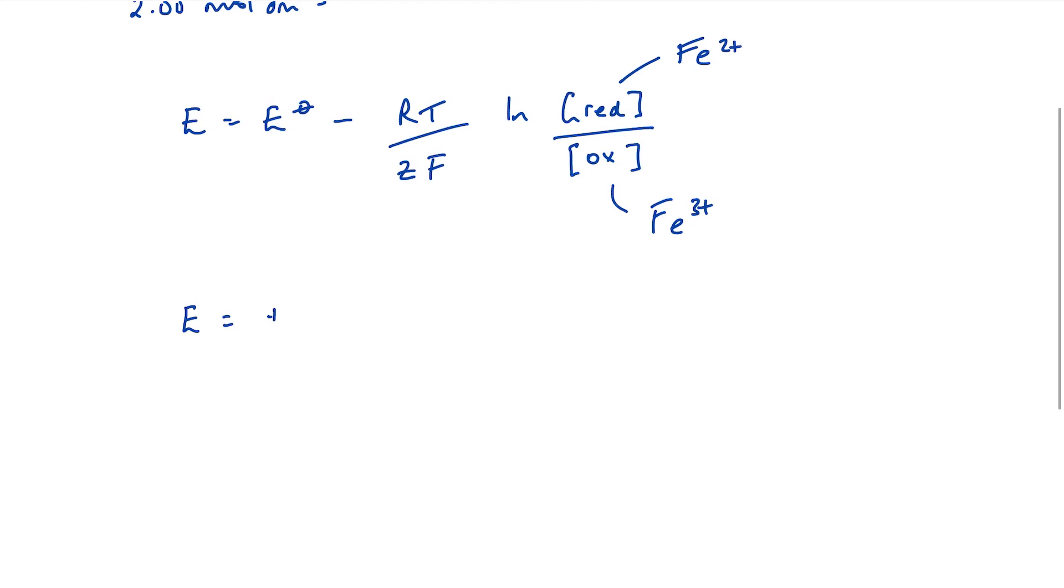So that becomes: E is equal to plus 0.77 minus 8.314. We'll say the temperature is room temperature, 298K. Z is 1 in this case, and Faraday's constant doesn't change. It being a constant, multiplied by the LN of 1 over 2. Stick some brackets around that. And when we plug that into our calculator, it comes out to be plus 0.788 volts. It has indeed become more positive.